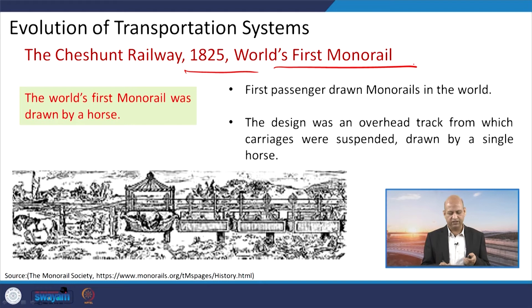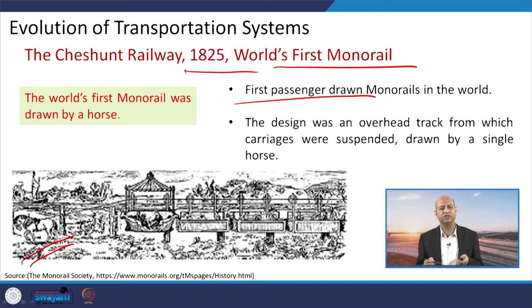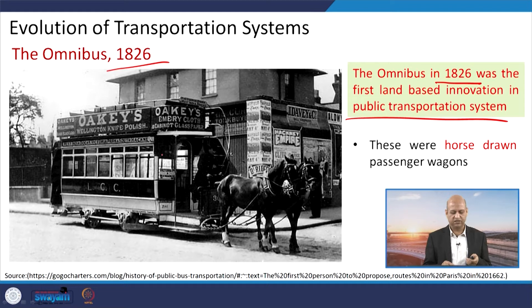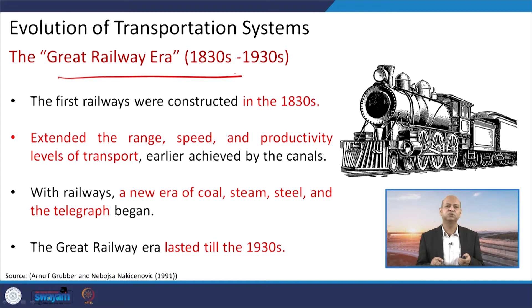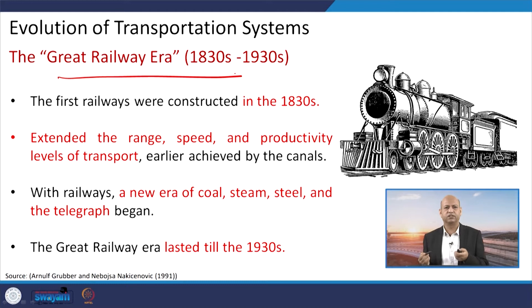In 1825, the world's first monorail was invented — it was the first passenger monorail but was pulled by horses, not like today's monorail. In 1826, the omnibus came as a public transportation system — it was also horse-driven but could carry many people, representing the initial design of the bus. Then the railway era came into existence from the 1830s to the 1930s. This was the age when a lot of tracks were laid down and the power of the steam engine was used in a big way, increasing power several-fold.